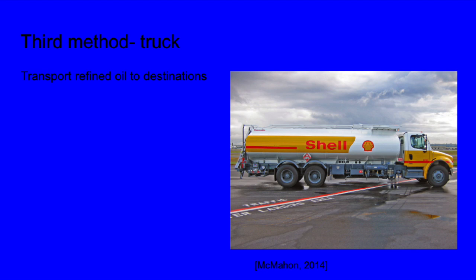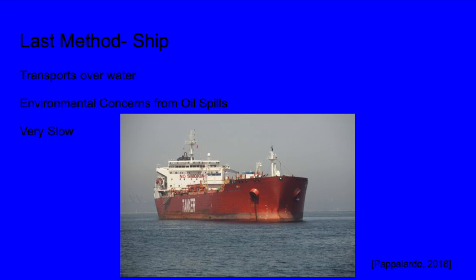The third way of transporting oil is through a truck, usually transporting refined oil to its destination, like gasoline to a gas station. The problem is that there is much more carbon emissions. In this picture, this truck is delivering jet fuel to an airport. The final method is by ship, used when oil transport over land cannot be used. The problem is that ships are very slow, and there is also the risk of oil spills affecting the hydrosphere and in some cases the biosphere, because there are a lot of animals such as eagles that live near coastlines.